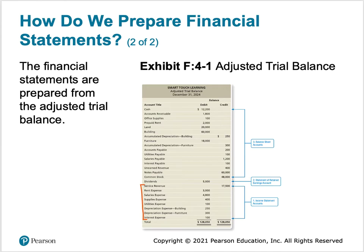We also have dividends, which we need to pull to our statement of retained earnings, and the information at the top goes on our balance sheet. That's why it's important to organize your trial balance correctly — assets, then liabilities, then equity — because then it's already organized and ready to be pulled straight to your financial statements.